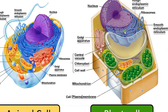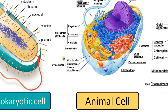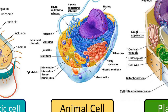Ribosomes are seen attached to RER and also freely distributed in the cytoplasm. In all these cells, the function is protein synthesis. Ribosomes attached to RER or rough endoplasmic reticulum in animal cell and plant cell specifically function in synthesis of secretory proteins or membrane proteins.